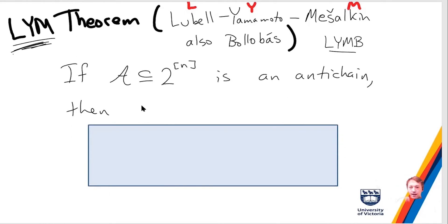So the theorem says that if A is an anti-chain, then the sum, so this is going to be stronger than Sperner's theorem, and we'll show that it's stronger later. So the sum from k equals 0 to k equals n of the size of A, or sorry, A intersect the sets of size k. So this numerator is just counting the sets in A that have size k, and then the denominator is just n choose k. So this is at most 1.